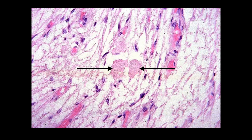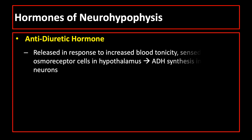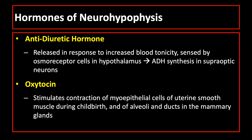Another picture shows the Herring bodies containing granules of either oxytocin or antidiuretic hormone. Antidiuretic hormone is released in response to increased blood tonicity as sensed by osmoreceptor cells in the hypothalamus, resulting in ADH synthesis in supraoptic neurons and release into circulation through the posterior pituitary gland. Oxytocin is important during childbirth because it stimulates contraction of uterine smooth muscle, and also stimulates contraction of alveoli and ducts in the mammary glands.